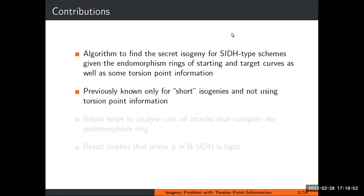Our main contribution is an algorithm for finding the secret isogeny in essentially any SIDH-type scheme, given the endomorphism rings of the starting and target curve, and utilizing the torsion point information. Previously this was only known when the isogenies were particularly short and did not use torsion information. Our attacks help analyze the security of B-SIDH and show that the B-SIDH parameters are tight and cannot be lowered without breaking the parameter sets.